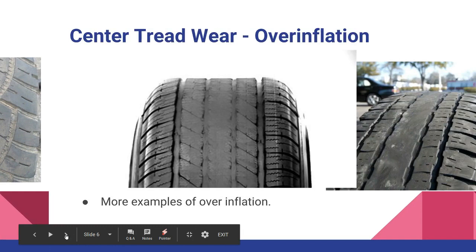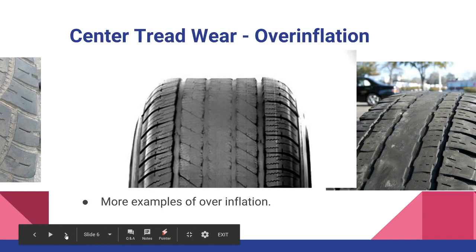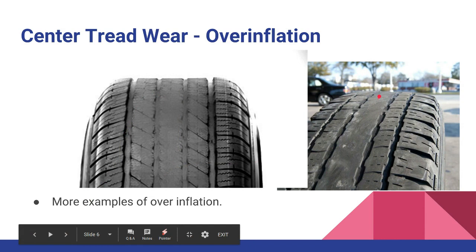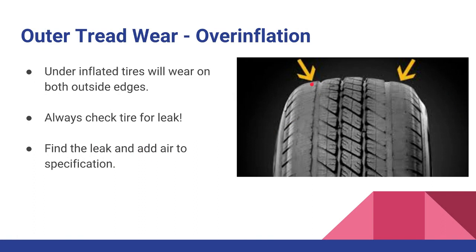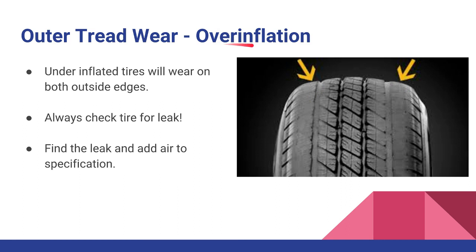Here are more examples of tires worn in the center tread — anytime you see this, it's a good indication they've been running with too much air. The only fix is to use a tire pressure gauge and urge the customer to buy one. When you have outside edge wear on both sides, that usually means under-inflation — the sidewall sags down and the tire wears on the outside edges.